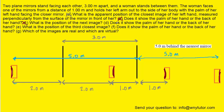And then for part D — does that image show the palm of her hand or the back of her hand? We can see that it's showing the back of her hand, because that is what's actually in view when we look into that mirror.